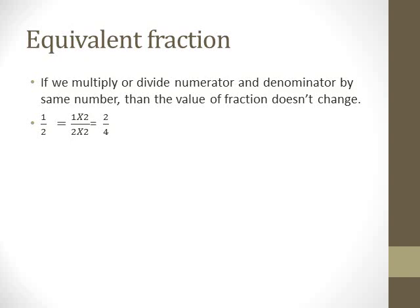Let's have another example. With the same 1 over 2, now we multiply by 3. If I multiply numerator 1 by 3, I also need to multiply denominator 2 by 3. So 1 × 3 = 3 and 2 × 3 = 6, meaning 1 over 2 equals 3 over 6 — also equivalent fractions. Can you think of one more example? If you multiply 1 by 4 and also multiply 2 by 4, you get 4 over 8. So 1 over 2 equals 4 over 8.